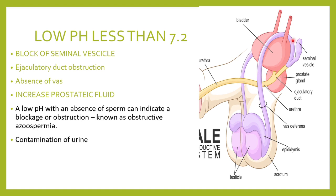The causes for low semen pH include blockage of the seminal vesicle, blockage of the ejaculatory duct, absence of vas deferens, or increased prostatic fluid. If pH is low and semen volume is also low, this is more in favour of obstruction, known as obstructive azoospermia. When there is an obstruction, semen quantity also decreases, and the basic component of semen is reduced, lowering the pH. Contamination of semen with urine can also cause the pH to decrease.